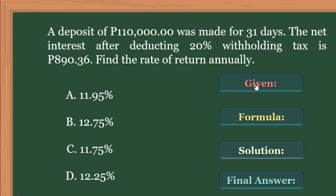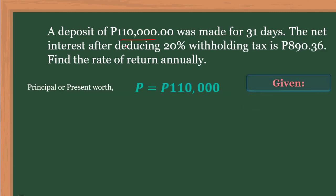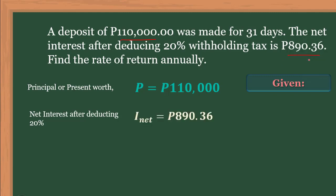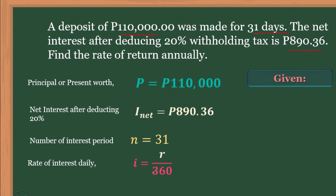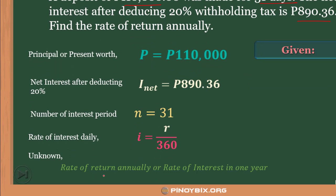Let's start with the given. Based on the problem, we have $110,000. The net interest after deducting 20% withholding tax is 890.36 — this is the interest after deducting the 20% withholding tax. The number of interest periods is 31 days. The rate of interest daily uses the formula R over 360, where R is the unknown — the rate of return annually, which is what we're looking for.